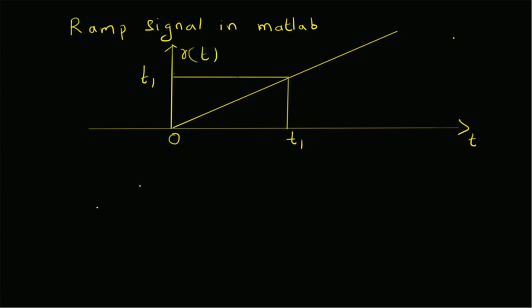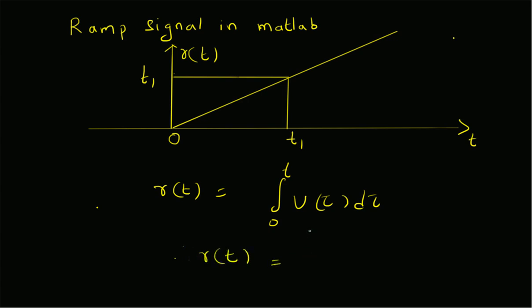The basic ramp signal can be defined as follows: r(t) is equal to the integral from zero to t of u(τ) dτ. That is, the ramp signal is the integral of the unit step signal. Therefore, the basic ramp signal is equal to t times u(t).